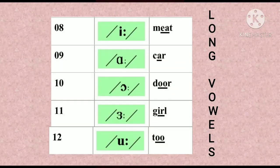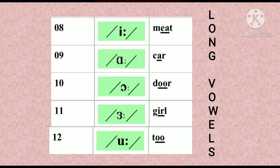Next, we have 5 long vowels. The first one is /iː/ as in 'meat'. The second one is /ɑː/ as in 'car'. The third one is /ɔː/ as in 'tore'. The fourth one is /ɜː/ as in 'girl'. The fifth one is /uː/ as in 'too'. These are the 5 long vowel sounds in English.